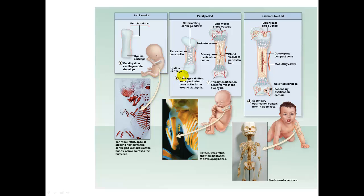In the second step, cartilage begins to calcify and a periosteal bony collar forms around the diaphysis of the bone. Chondrocytes produce holes in the matrix, that matrix begins to calcify, and the chondrocytes will then die. As that happens, blood vessels are growing in towards the cartilage. Osteoblasts will develop and begin secreting osteoid, forming that layer of osteoid around the diaphysis called the periosteal bone collar, or the bony collar.